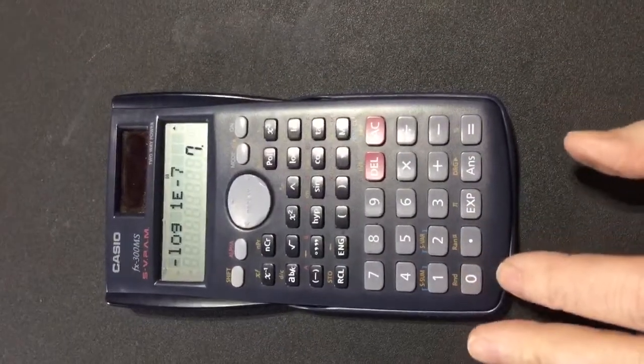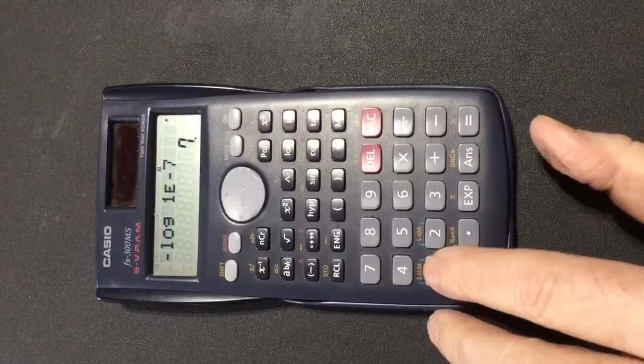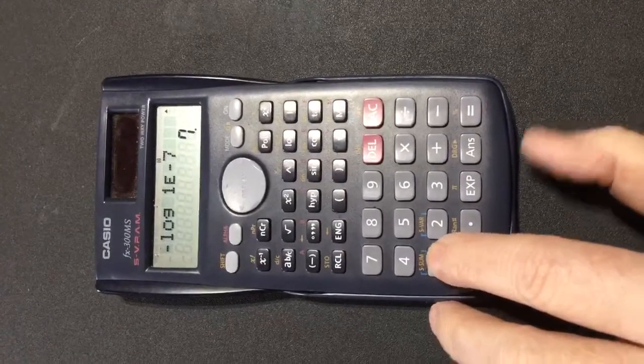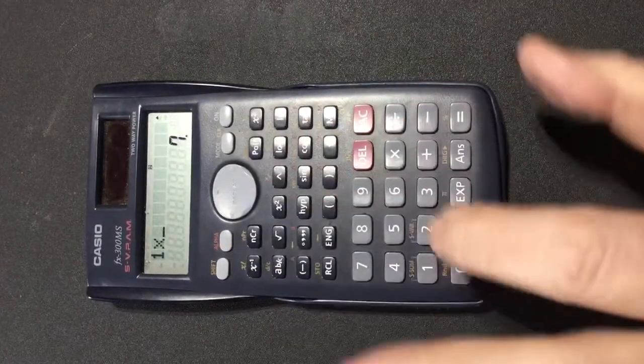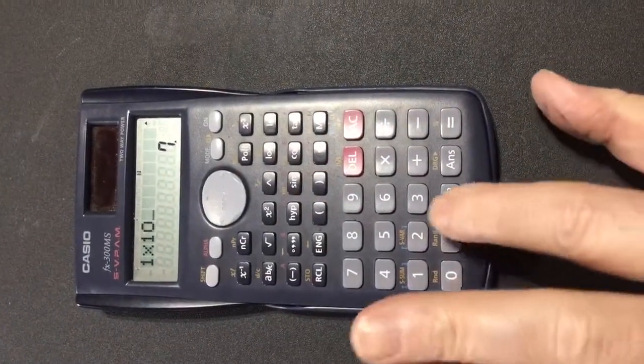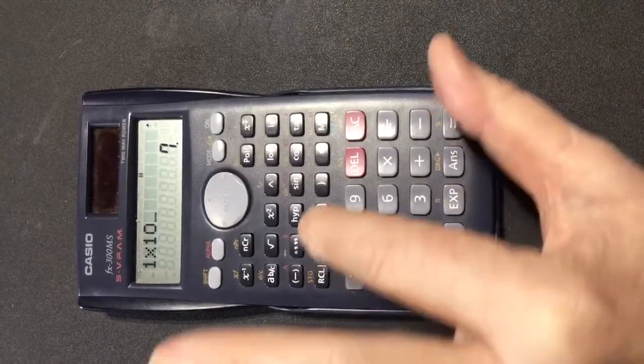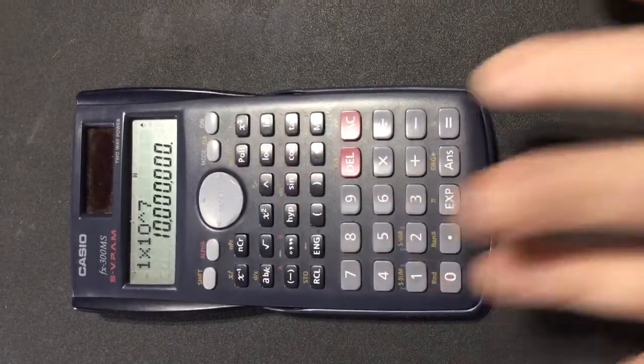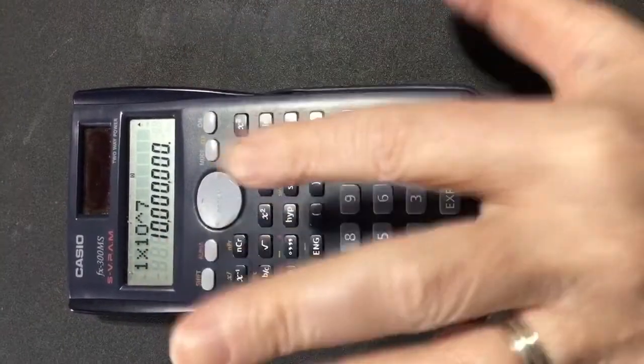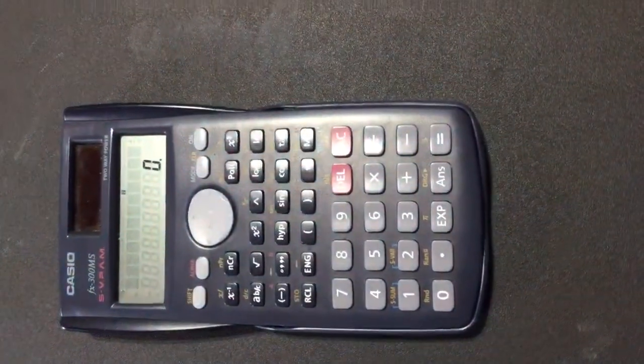You do 1 times 10. What they do is 1 times 10 exponent 7, or they use the caret button 7. That's not going to work. That's totally different. So let me go through one more time with the operation.